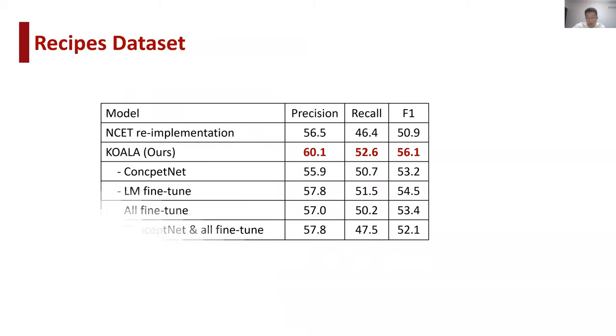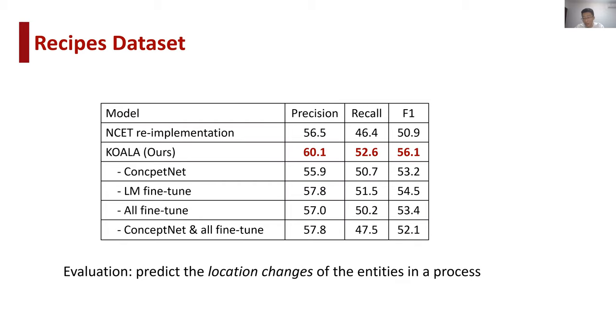To further test the performance of KOALA, we conduct auxiliary experiments on another procedural text dataset, namely Recipes, which is in the cooking domain. We compare KOALA with its variants and its base model NCET. Although not devised for cooking domain, our model still outperforms NCET and other variants in predicting location changes of recipe ingredients. This further proves the effectiveness of our model.